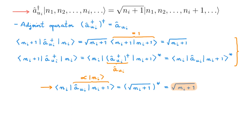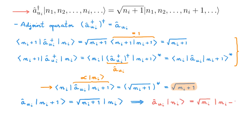Putting this together, we see that aUI acting on the ket |ni+1⟩ must equal that expression. To make it equivalent to the creation operator's form, we decrease ni by 1, obtaining the final expression. So what does aUI do? It removes a particle that was occupying single particle state UI, allowing us to go from Fn to Fn-1. For this reason, we call aUI the annihilation operator.